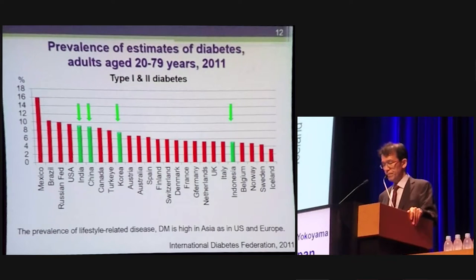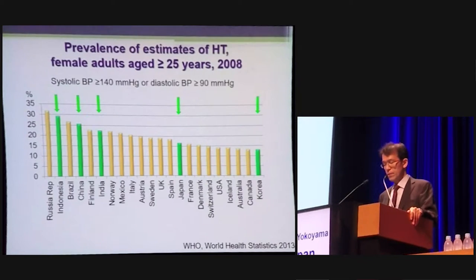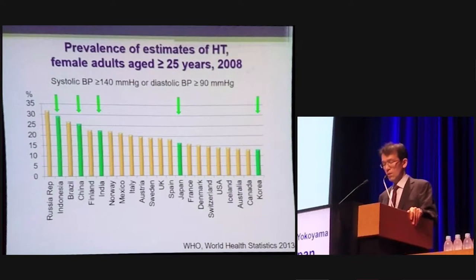The prevalence of lifestyle-related disease — male hypertension in particular — is as high in Asia as in the US and Europe. The prevalence of female hypertension is likewise high. So what correlates to lifestyle-related disease better than metabolic syndrome itself?